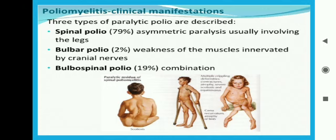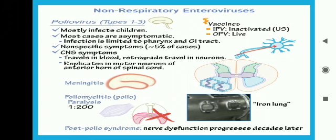Clinical manifestations include spinal polio, bulbar polio, and bulbospinal polio. Spinal polio occurs in approximately 79% of cases and usually involves the legs. Bulbar polio involves weakness of muscles innervated by cranial nerves. In 19% of cases there can be both — spinal plus bulbar polio. Most infections occur in children; most cases are asymptomatic, with non-specific symptoms in 5% of cases. Post-polio syndrome involves neurological dysfunction progressing decades later.